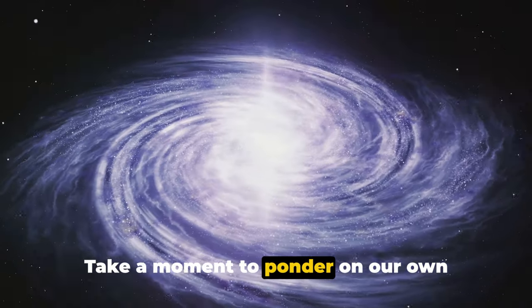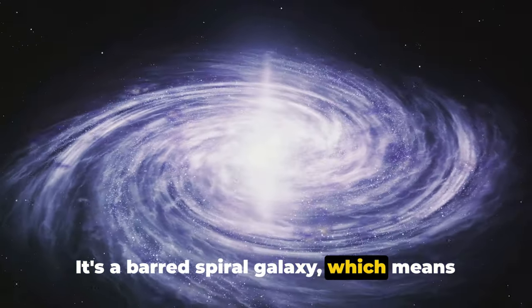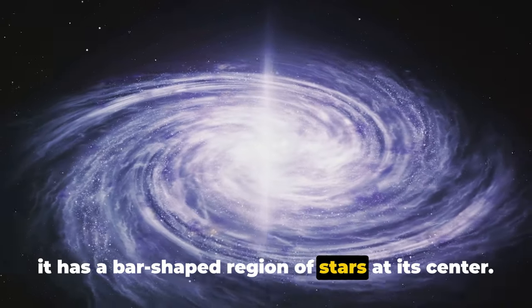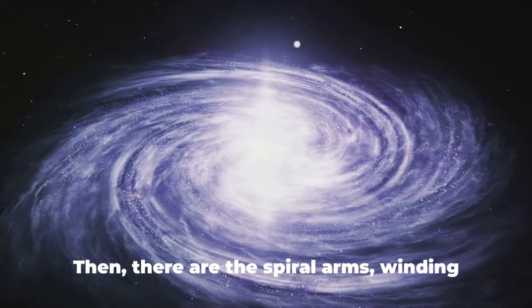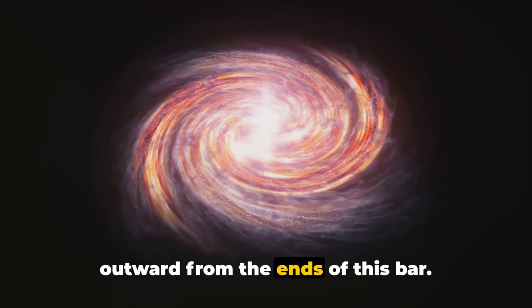Take a moment to ponder on our own galaxy, the Milky Way. It's a barred spiral galaxy, which means it has a bar-shaped region of stars at its center. Then there are the spiral arms, winding outward from the ends of this bar.